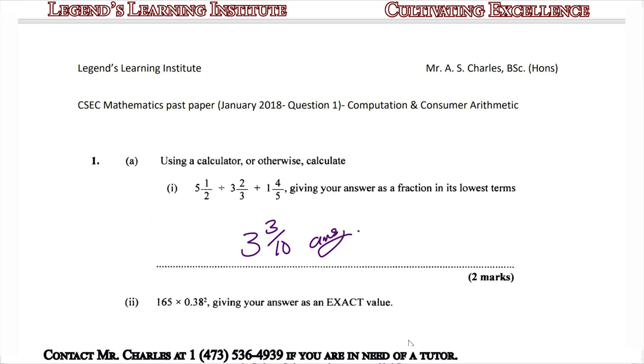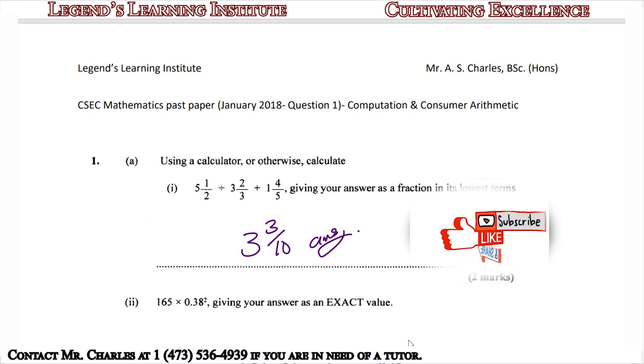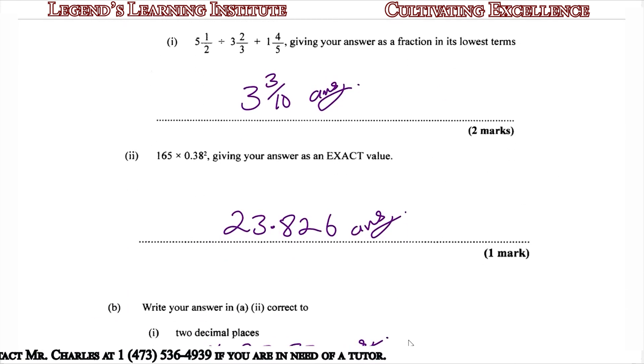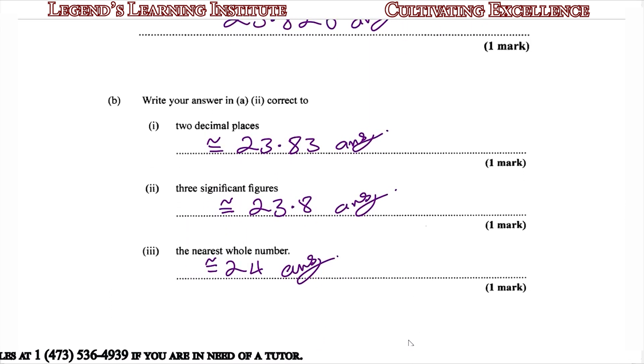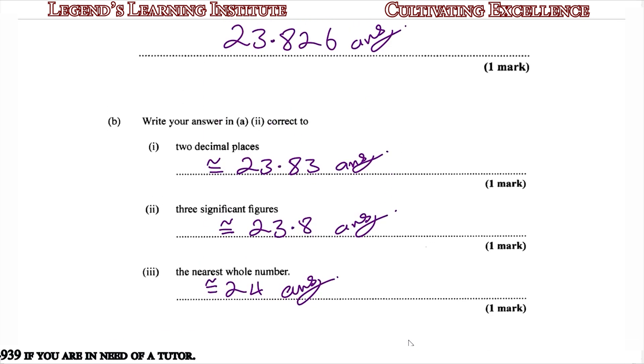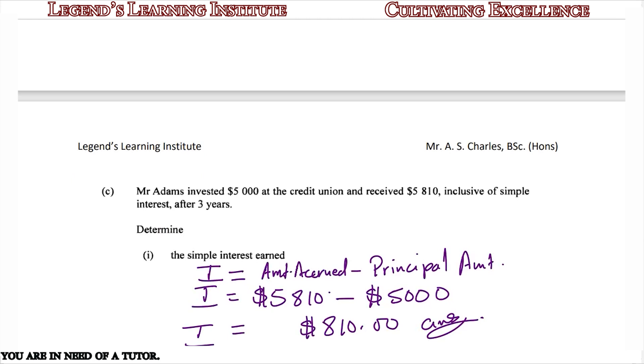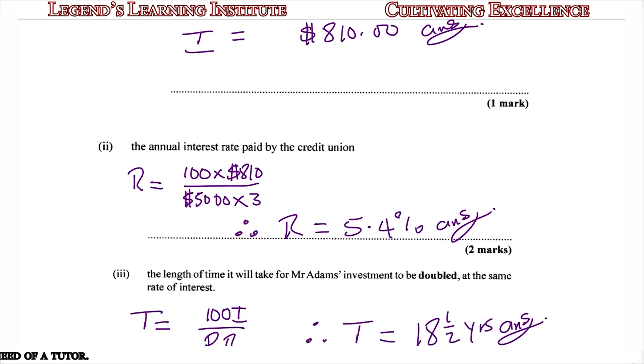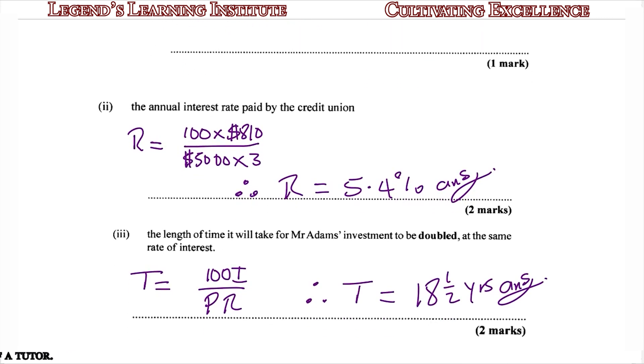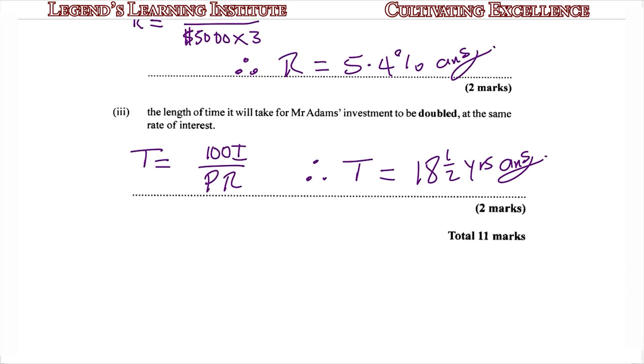Let us recap our answers. For 1A(i): 3 and 3/10. For 1A(ii): 23.826. For part B(i): 23.83. For part B(ii): 23.8. For part B(iii): 24. Part C(i): $810 simple interest. The rate paid by the credit union was 5.4% per annum. And part C(iii): the time for Mr. Adams' investment to be doubled is 18.5 years.